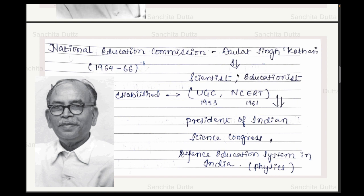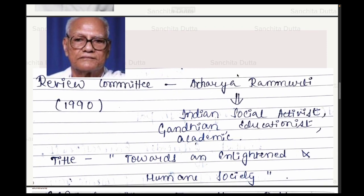Then comes the most comprehensive and most detailed education commission of all times — after NEP 2020 obviously — which is the National Education Commission (Kothari Commission), that came under the chairpersonship of Dr. Daulat Singh Kothari in 1964-66. He was an Indian scientist and educationist. His contribution to Indian education is enormous — he was instrumental in establishing the UGC and NCERT. He was also the President of the Indian Science Congress and established the defense education system in India. His field was physics.